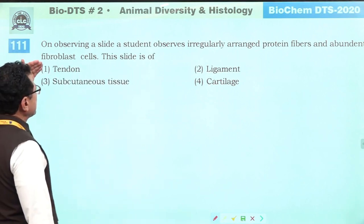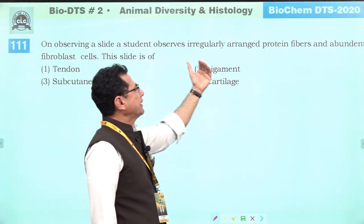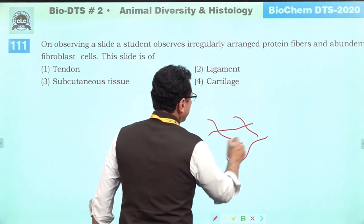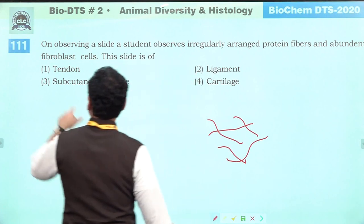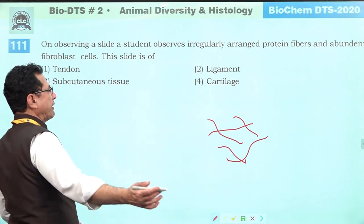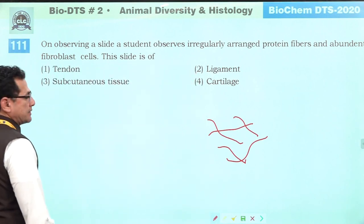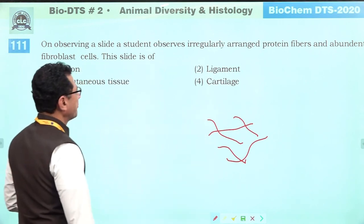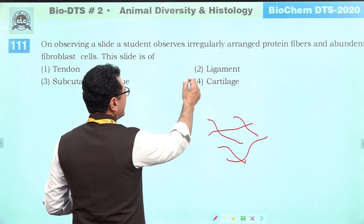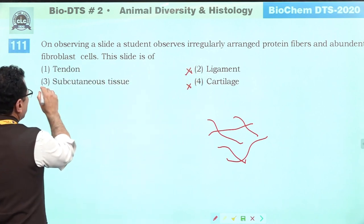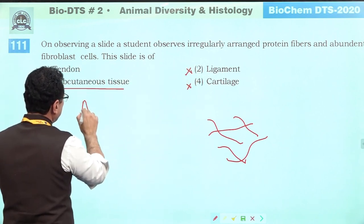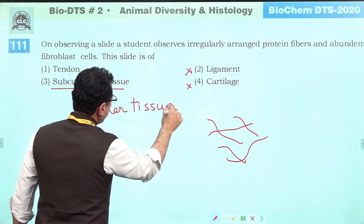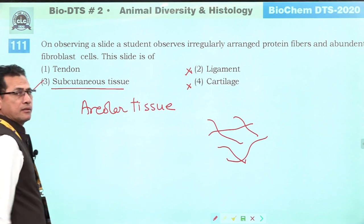On observing a slide, a student sees irregularly arranged protein fibers and abundant fibroblast cells. This structure is found in areolar tissue (loose connective tissue) under the skin. It is not seen in cartilage, ligament, or dense tissue. This is the subcutaneous areolar tissue. Answer is three.